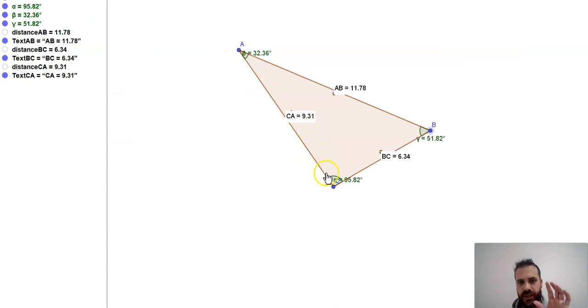This is a triangle. Look at the angles: 95.82 degrees is the largest, 51.82 is the middle, and the smallest angle is at A. Now let's look at the sides. The corresponding side is the one opposite the angle. The largest angle has an opposite side of 11.78, the middle angle has 9.31, and the smallest angle has 6.34. The largest angle corresponds to the longest side.